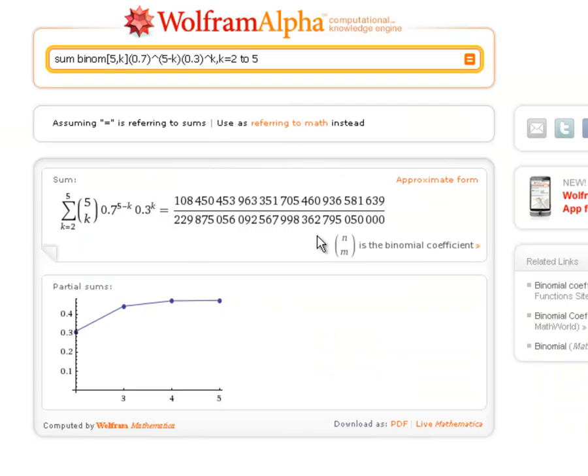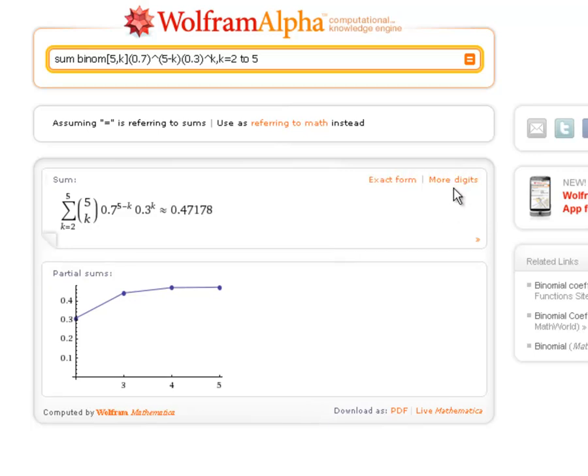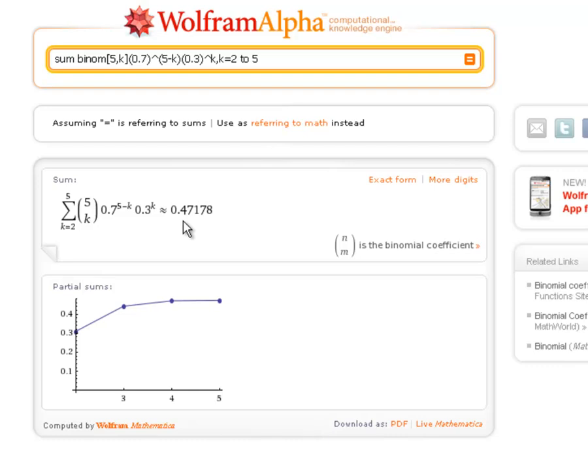If I do that, they do give me an exact fraction. It's a rather messy exact fraction, so that's why I'm going to click on approximate form. And there's actually about a 50% probability that I get at least two productive wells. More exact, 0.4718 or so.